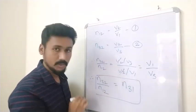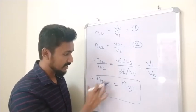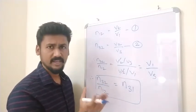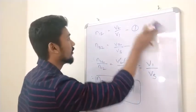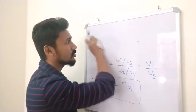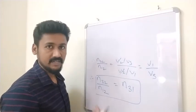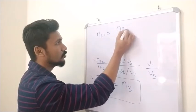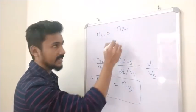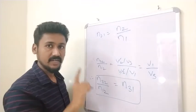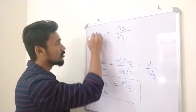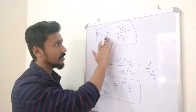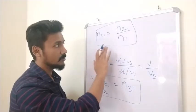So three media can be related to each other by this formula. There is one more useful relation: n21 = n2/n1, where n2 and n1 are the absolute refractive indices of the respective media. We will use this in later formulas.